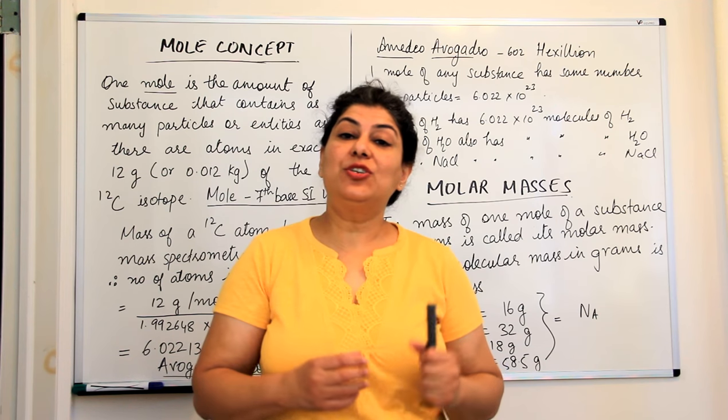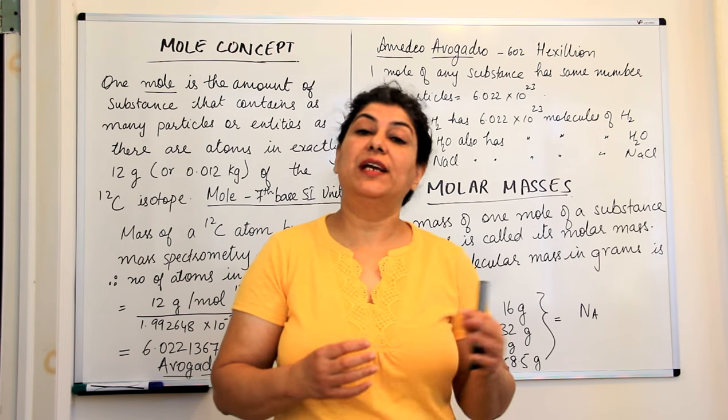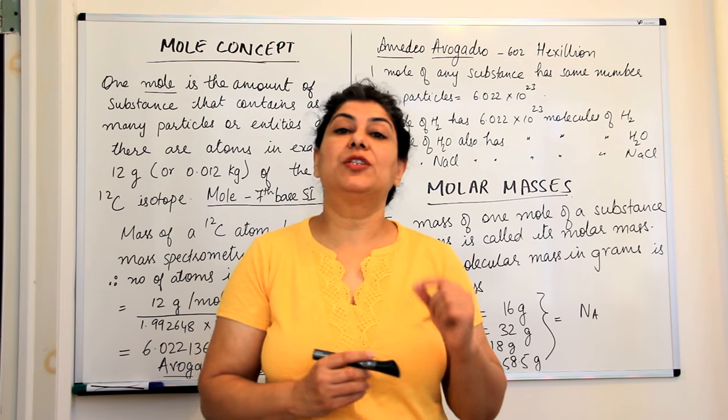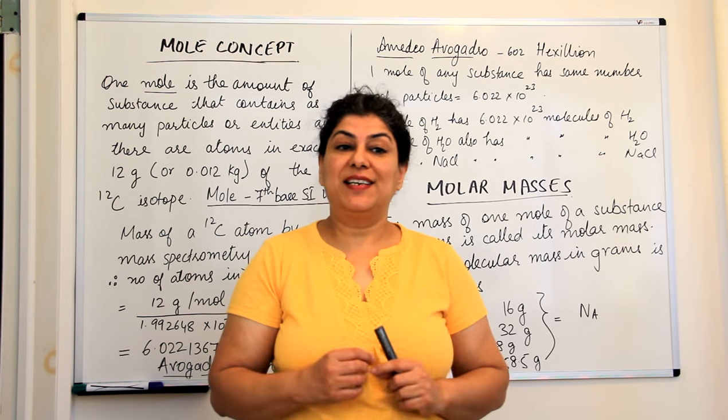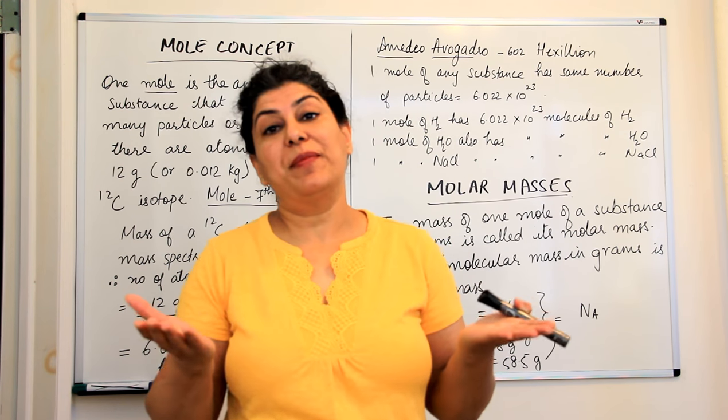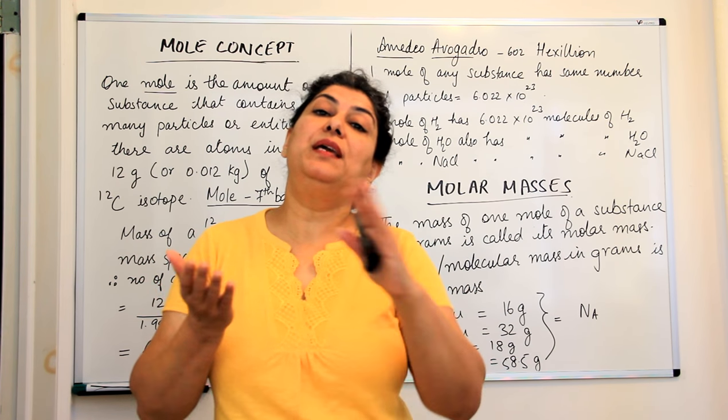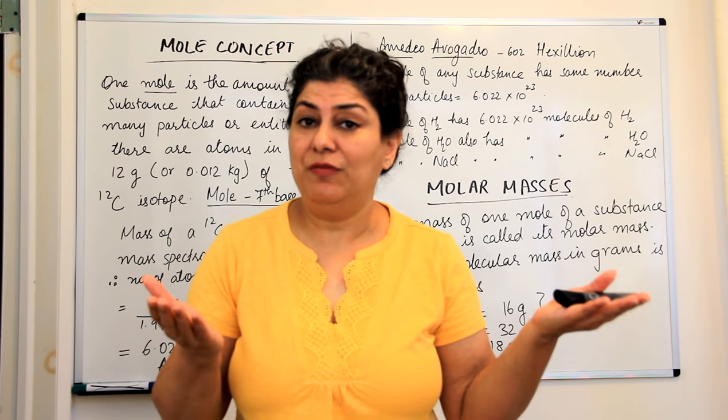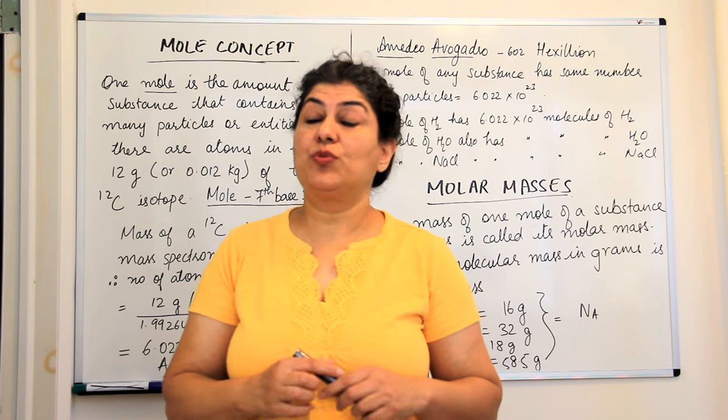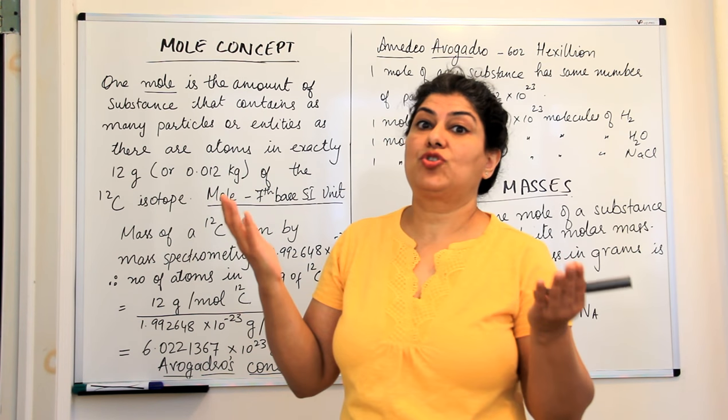In the previous video I told you that scientists had decided on a special unit for atoms and molecules because they were very very small in size and this unit was called the atomic mass unit. But practically we did not have any balance that could actually weigh anything in atomic mass units. We still had balances which could weigh only in grams maybe up to the fourth place of decimal. We could be that accurate but we could never be as accurate as the atomic mass unit which is 10 to the power of about minus 23 parts of a gram.